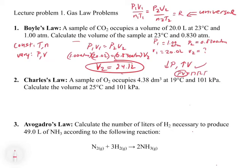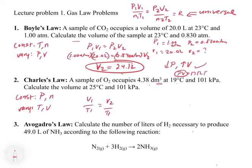Now let's look at the Charles' law example. A sample of CO2 occupies a volume of 4.38 decimeters cubed at 19 degrees Celsius and 101 kPa. Calculate the volume at 25 degrees Celsius and 101 kPa. The pressure is being held constant, and so is the number of moles. We're changing the temperature and the volume — that's Charles' law. Eliminating pressure and number of moles from the universal gas law gives us V1/T1 = V2/T2.